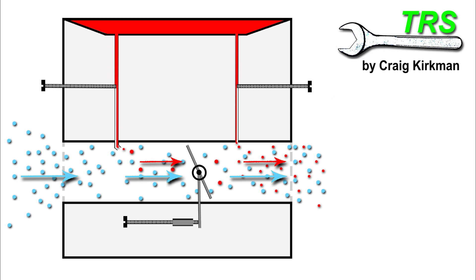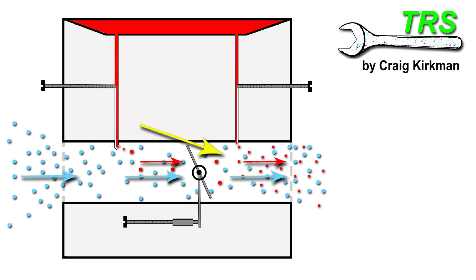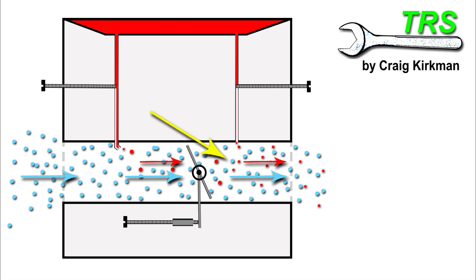From a decent idling speed, continuing to turn the low screw in further will continue to reduce the amount of fuel coming out of the low jet, making the fuel-air mixture more and more lean. For a little while engine revs will raise as the engine becomes that little bit leaner, but eventually it will get too lean and the engine won't run well at all.